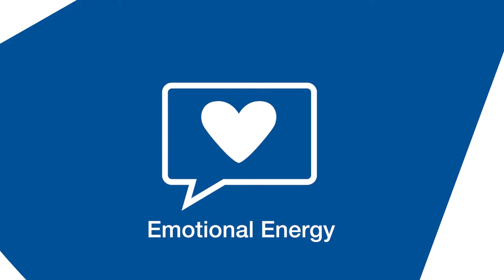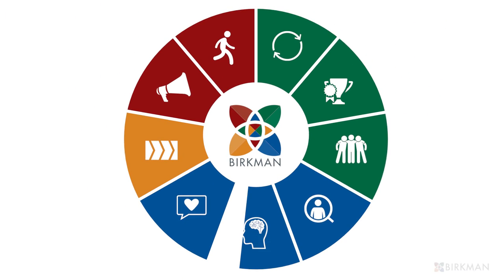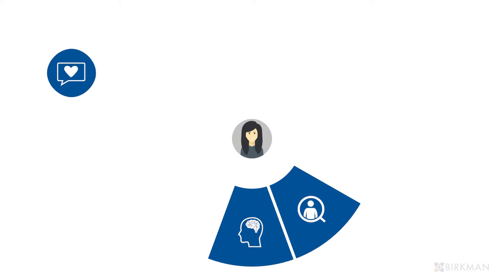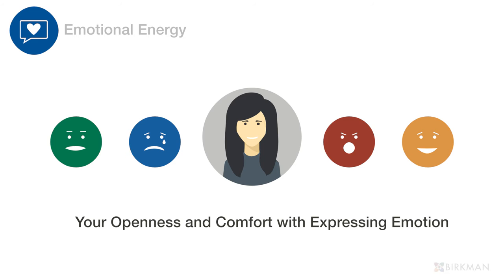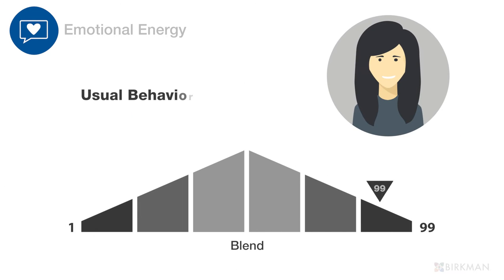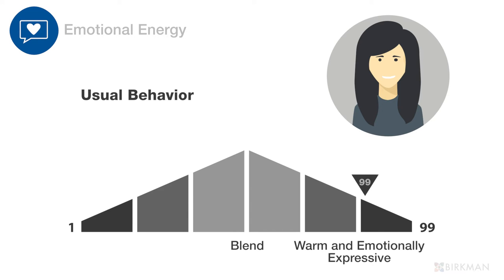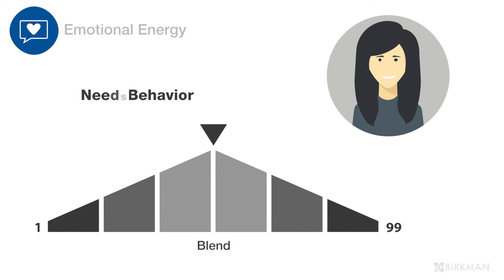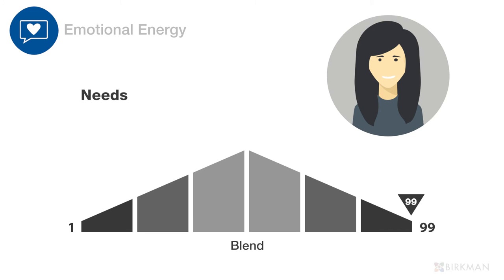Emotional energy is one of the nine personality components of the Berkman method. It measures your openness and comfort with expressing emotion. If you have a high usual score, you are seen as warm and emotionally expressive, whereas a low usual score means you are seen as objective and emotionally practical.